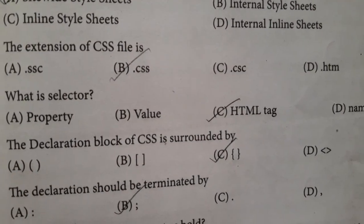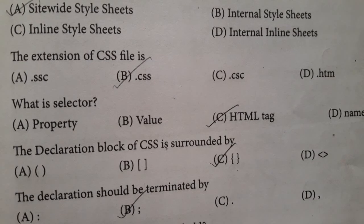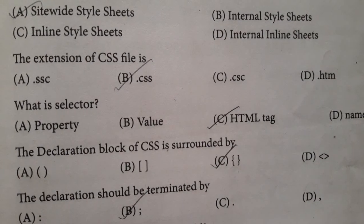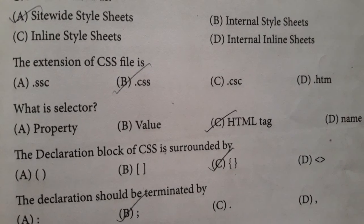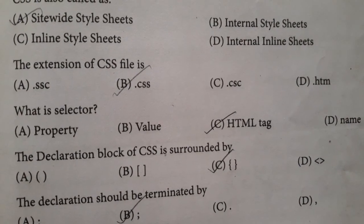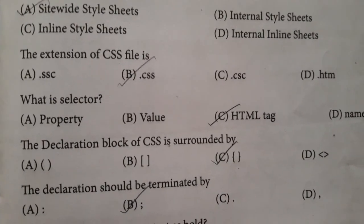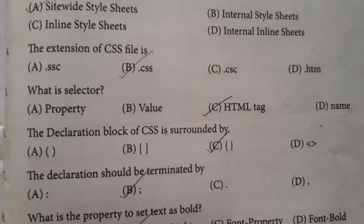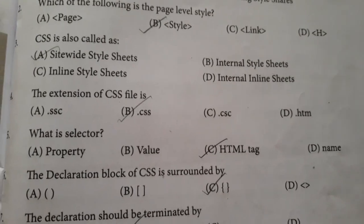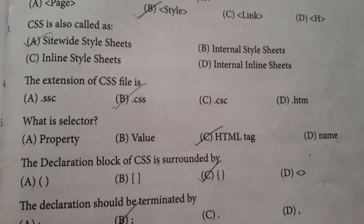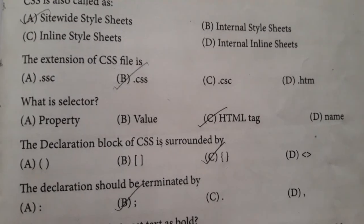Question number four: the extension of CSS file is. Option A: .sss. Option B: .css. Option C: .csc. Option D: .htm. Answer is option B: .css. Question five: what is a selector? Option A: property. Option B: value. Option C: HTML tag. Option D: name. Answer is option C: HTML tag.